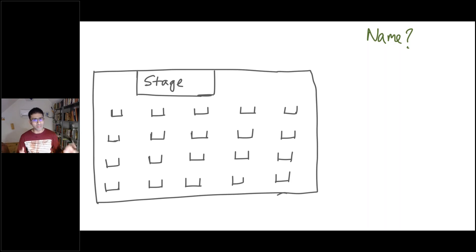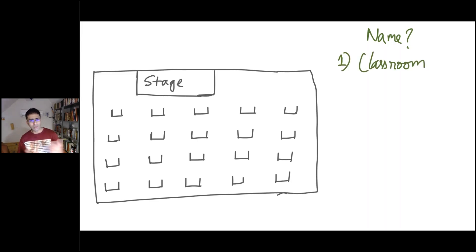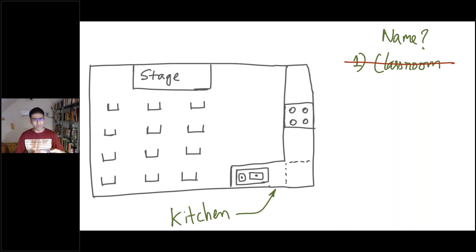The example I want to start with is this: you have a room with chairs arranged in four rows of five chairs each — about 20 chairs — and it has a stage. I just showed you this picture and I tell you, go ahead and name this. One name you may very easily come up with is classroom — it looks like a classroom, it's small in size with a stage, so it's probably a classroom. But now I tell you that classroom also has a kitchen attached. So there are chairs, a stage, and a kitchen. Now go and name it.